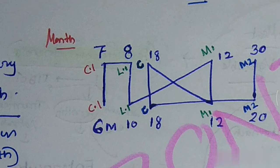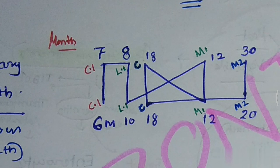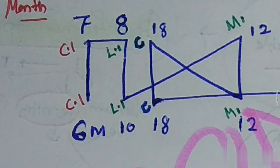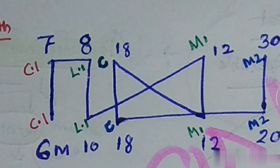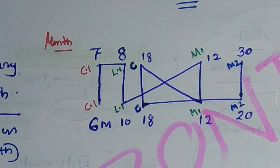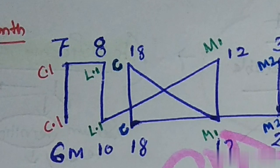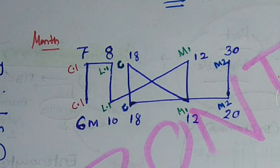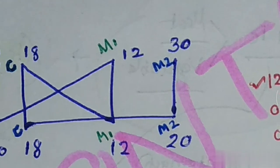Next is the upper lateral incisor at eight months of age, then lower lateral incisor at ten months. First molar erupts at twelve months of age, then canine — both upper and lower — at 18 months. Second molar develops between 20 to 30 months of age.